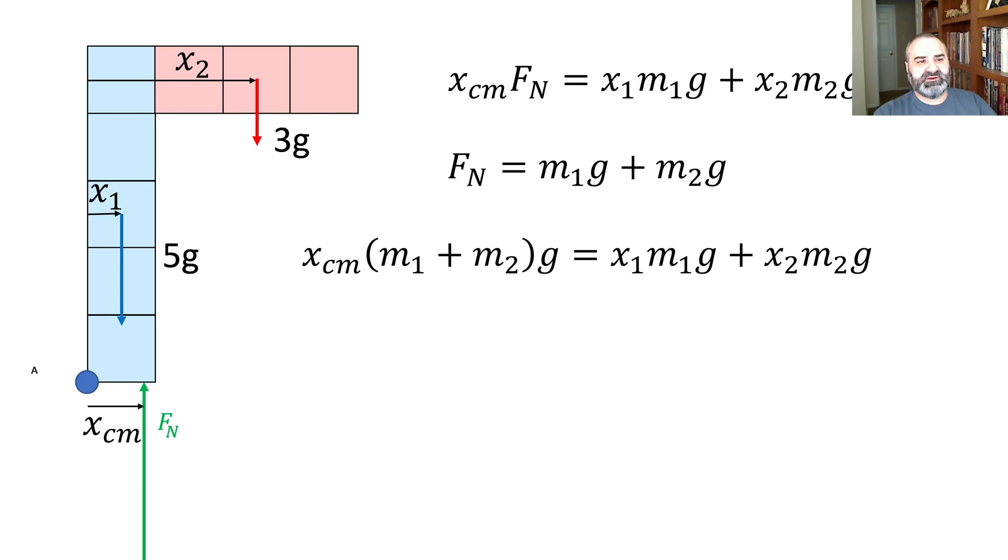So M1 being 5, M2 being 3, and our distances are, that distance is half a length unit because it's in the middle, and this distance is two and a half length units. And so we see this and find that the center of mass is 1.25 length units.